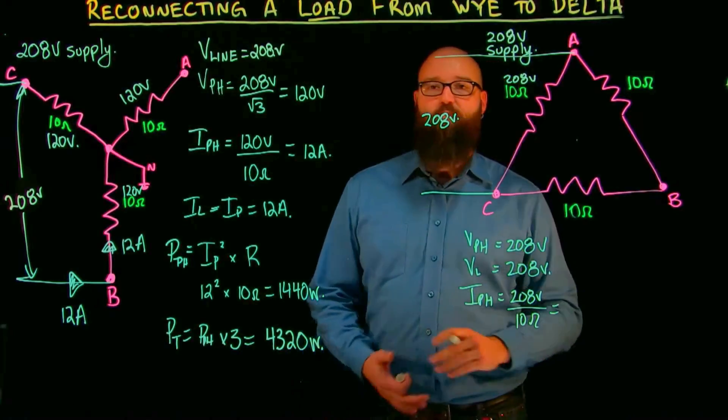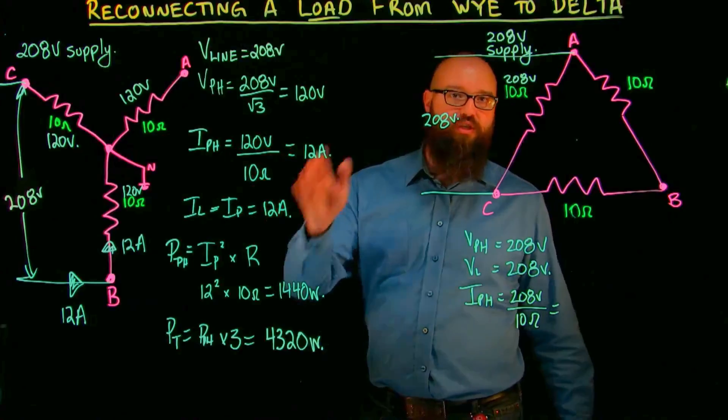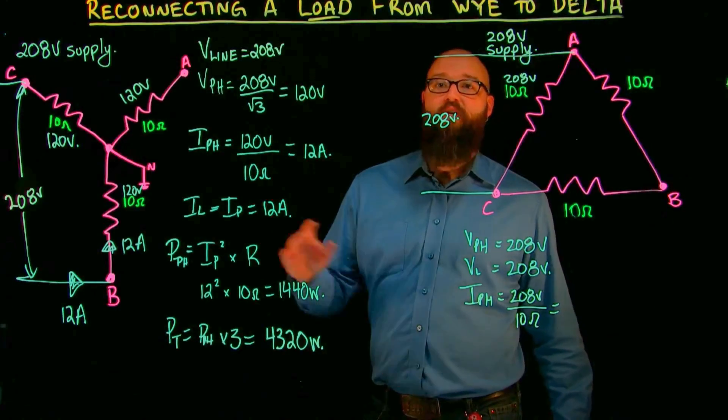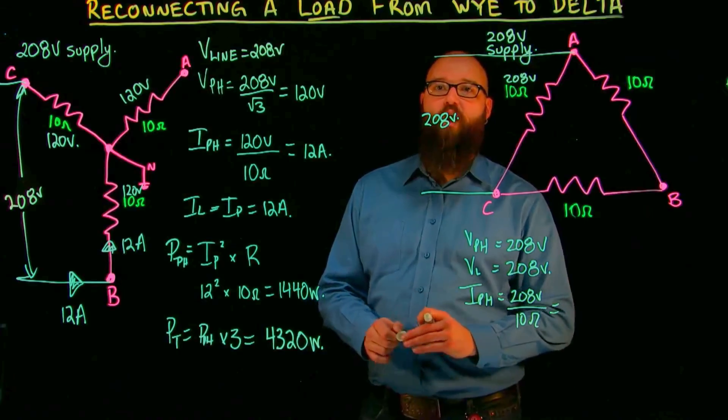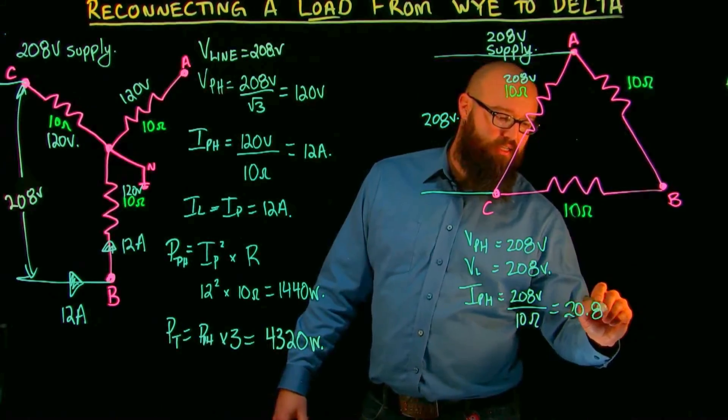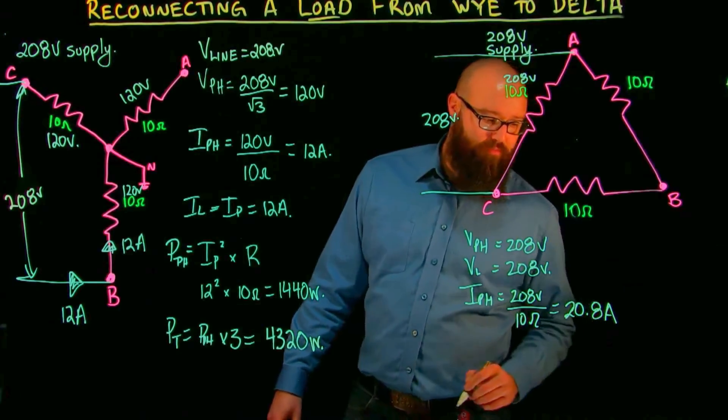Gives us, well let's do a prediction here. If my voltage is root 3 bigger than it was connected in Y, means that I should, according to Ohm's law, have root 3 bigger current: 20.8 amps. That works out.